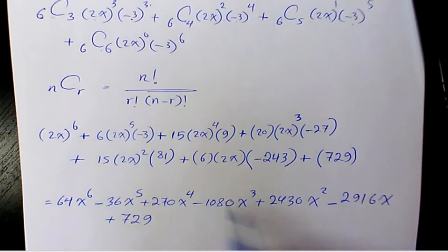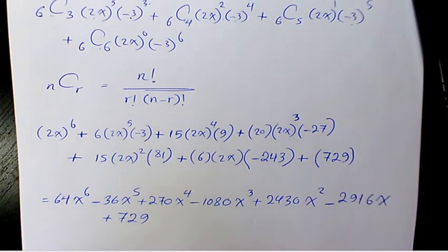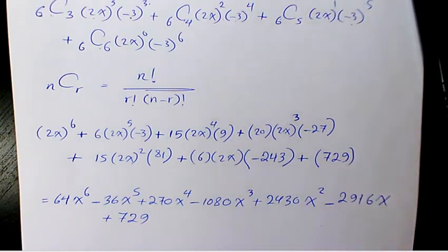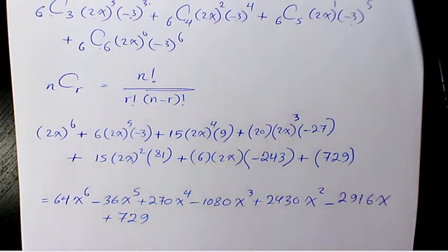So that's the expanded form of (2x minus 3)^6. I hope you enjoyed this video — please leave me a comment if you have any questions, and don't forget to subscribe to this channel. You can have access to many other videos regarding binomial expansion and other topics in math, chemistry, and physics. Thank you for watching and have a great day!